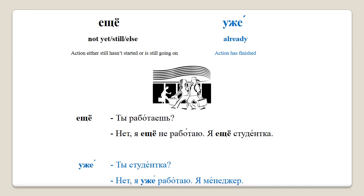I will read each dialogue till the end first and then translate it. You can see that we have used еще here twice in different meanings — the choice of meaning will depend on the context. In the first phrase, 'я еще не работаю' describes an action that hasn't yet started, whereas in the second phrase, 'я еще студентка,' it describes an action that is still going on. So it becomes: 'Do you work?' 'No, I'm not working yet. I am still a student.'